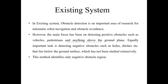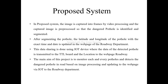This method identifies only the negative obstacle region. Whereas in our proposed system, the image is captured into frames by video processing and the captured image is preprocessed so that the dangerous pothole is identified and segmented. After segmenting the pothole, the latitude and longitude with the exact time and date is updated in the webpage of the roadway department. This shared data is done using an IoT device, where data of the detected pothole is transmitted to the TTL board and the location to the roadway department.